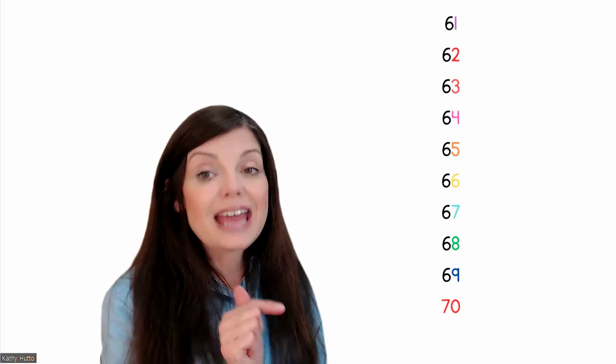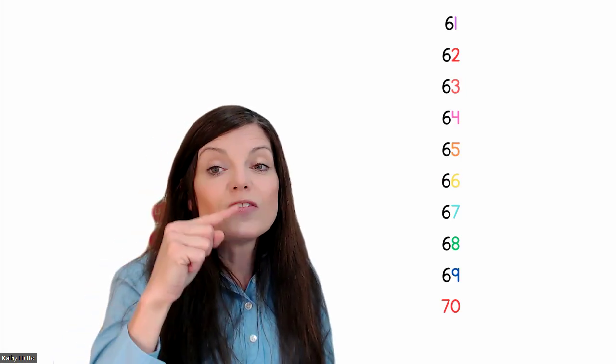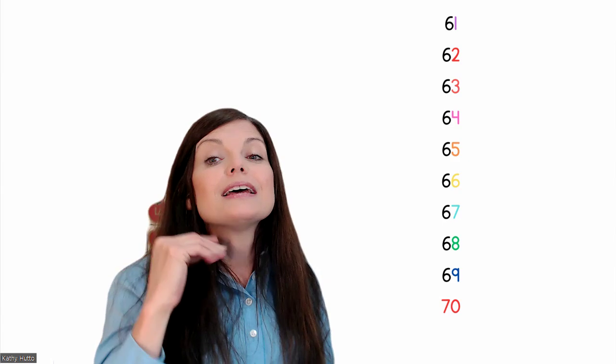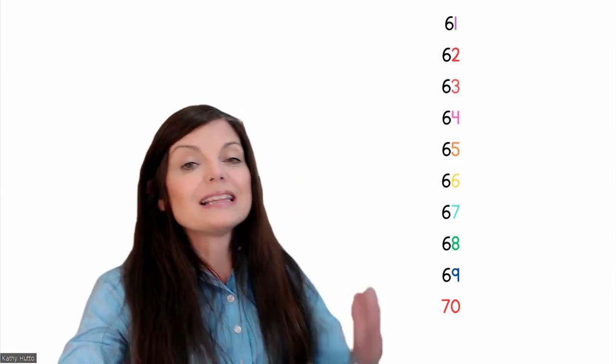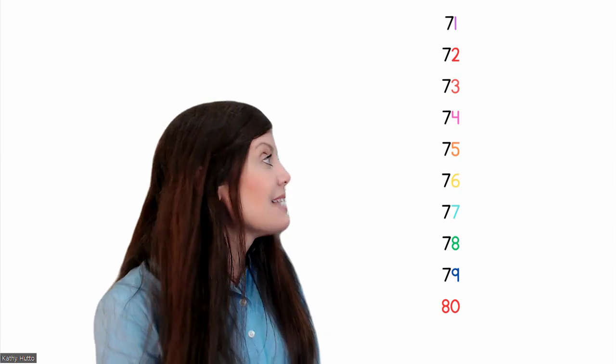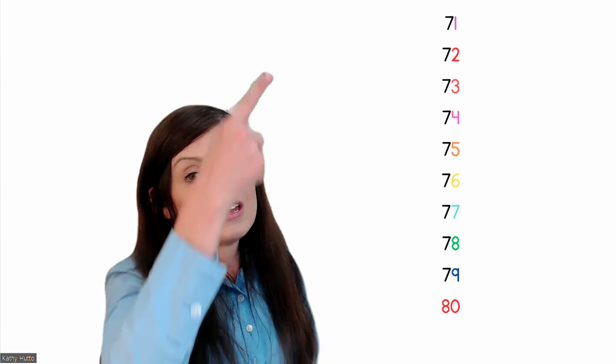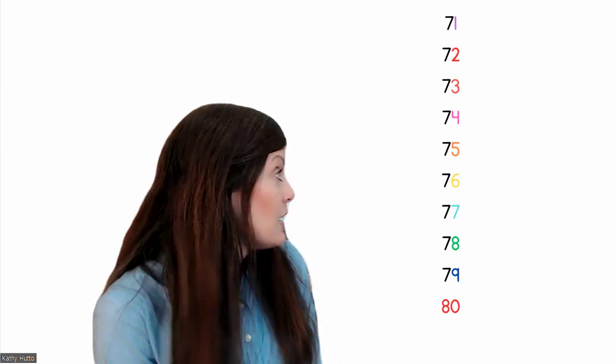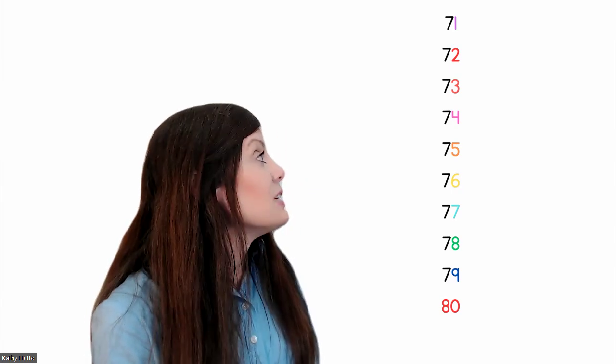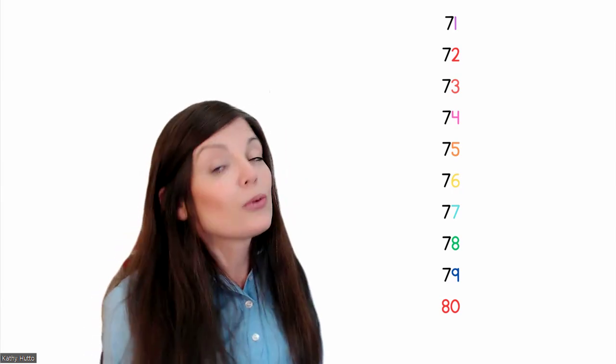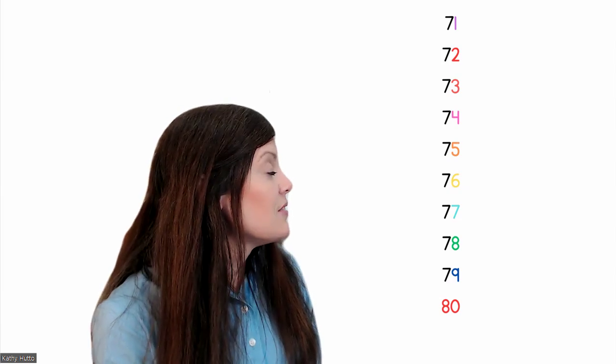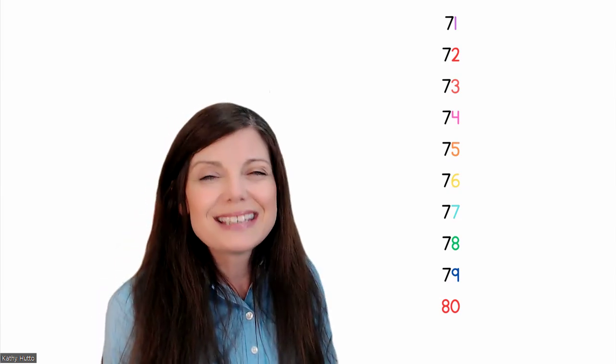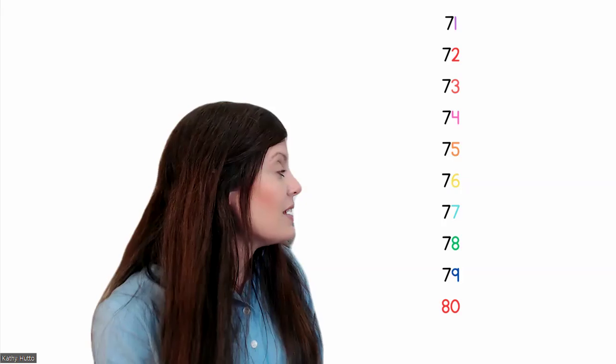70 is the next 10. 10, 20, 30, 40, 50, 60. Now we're at 70. All right, let's put a 70 in the front. And here, if you're writing the numbers, you'll put a 7 before each of the numbers, just in order. 71, 72, 73, 74, 75, 76, 77, 78, 79.